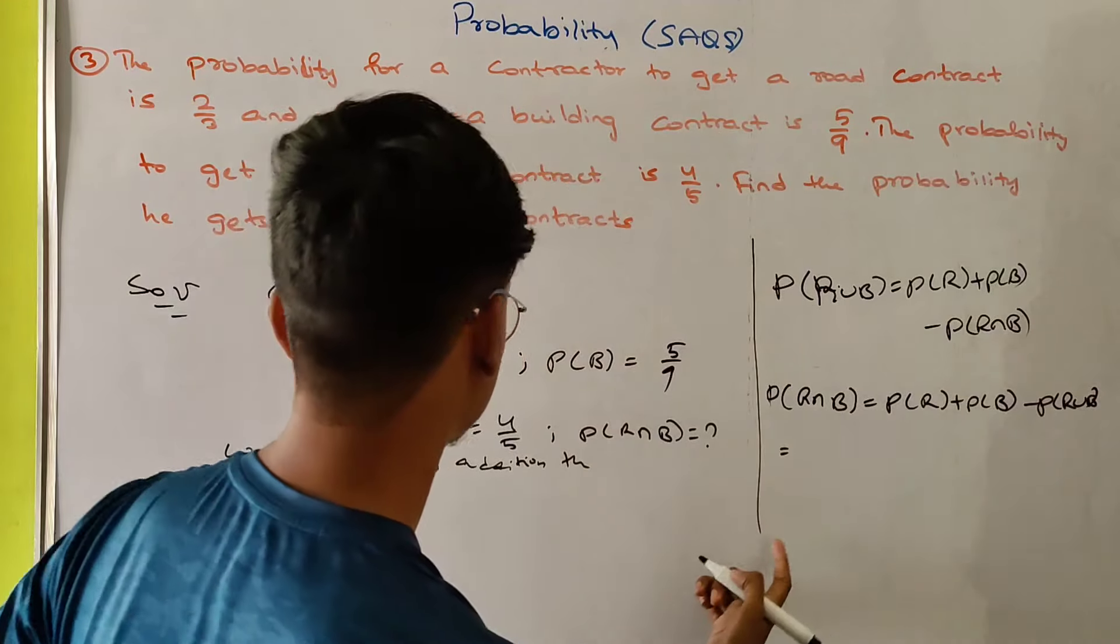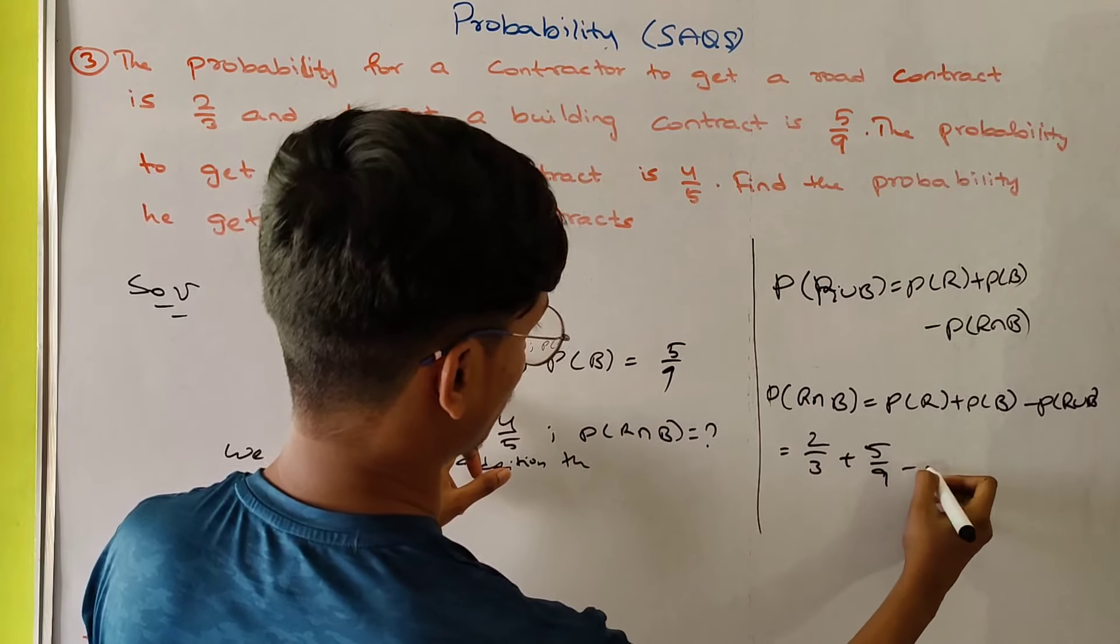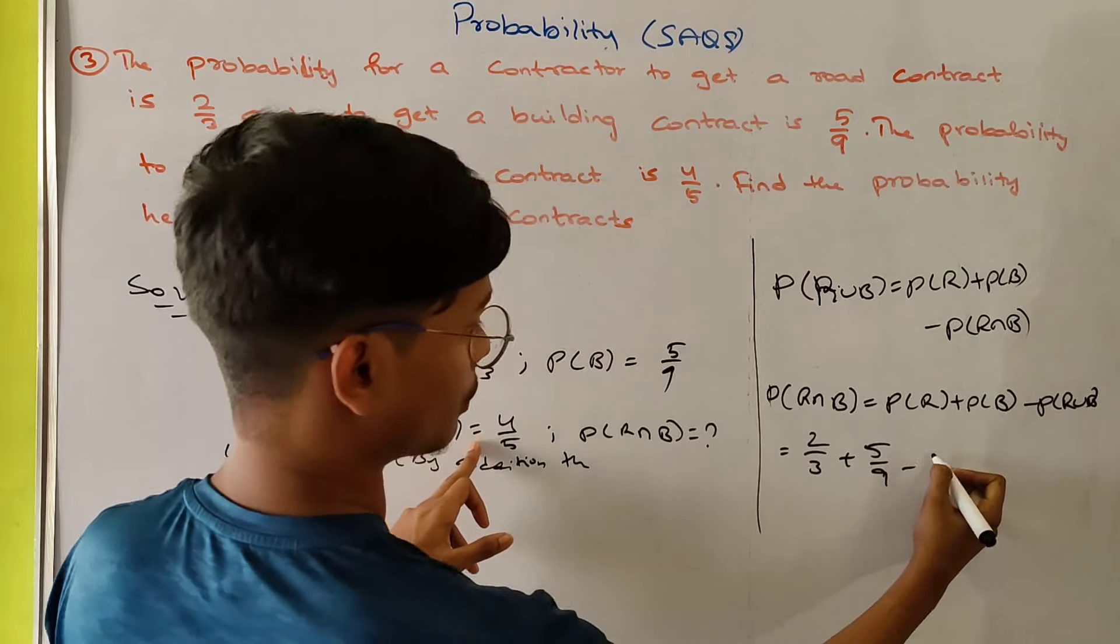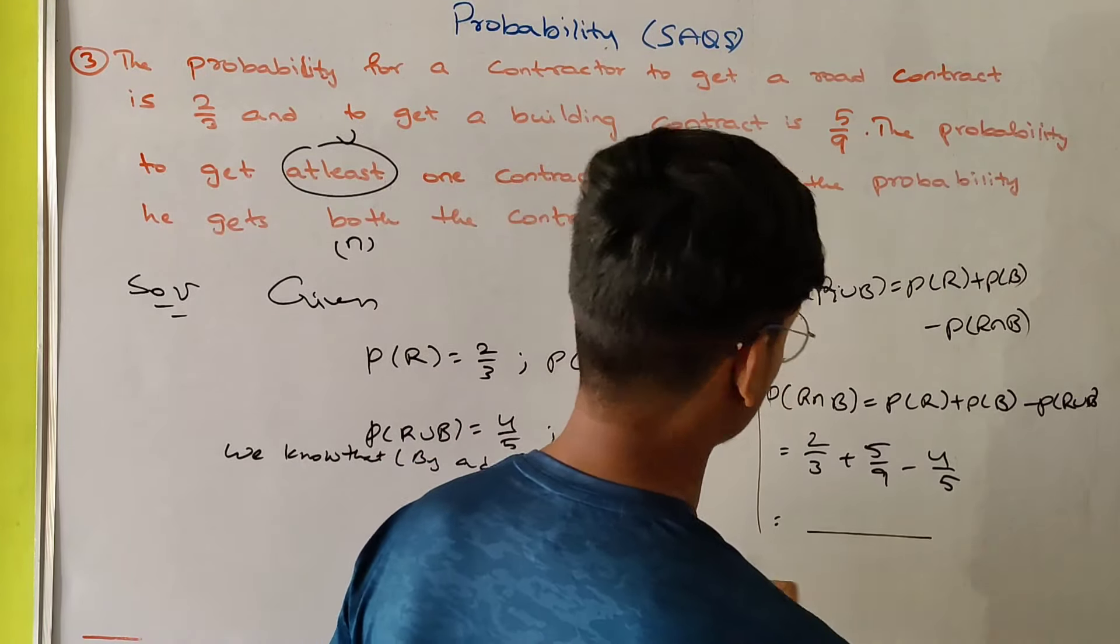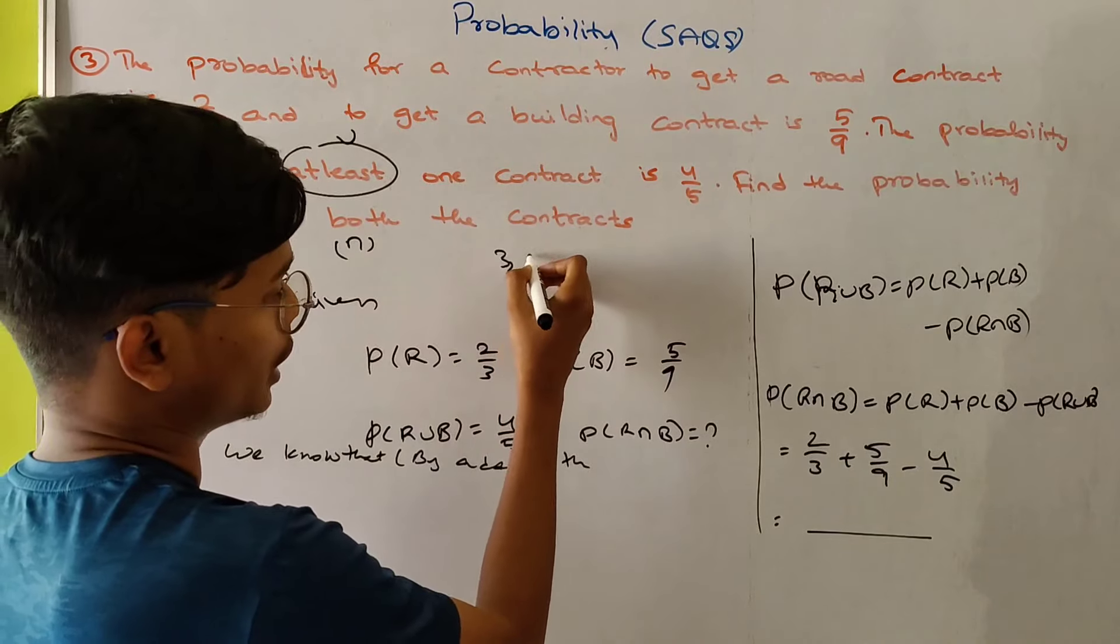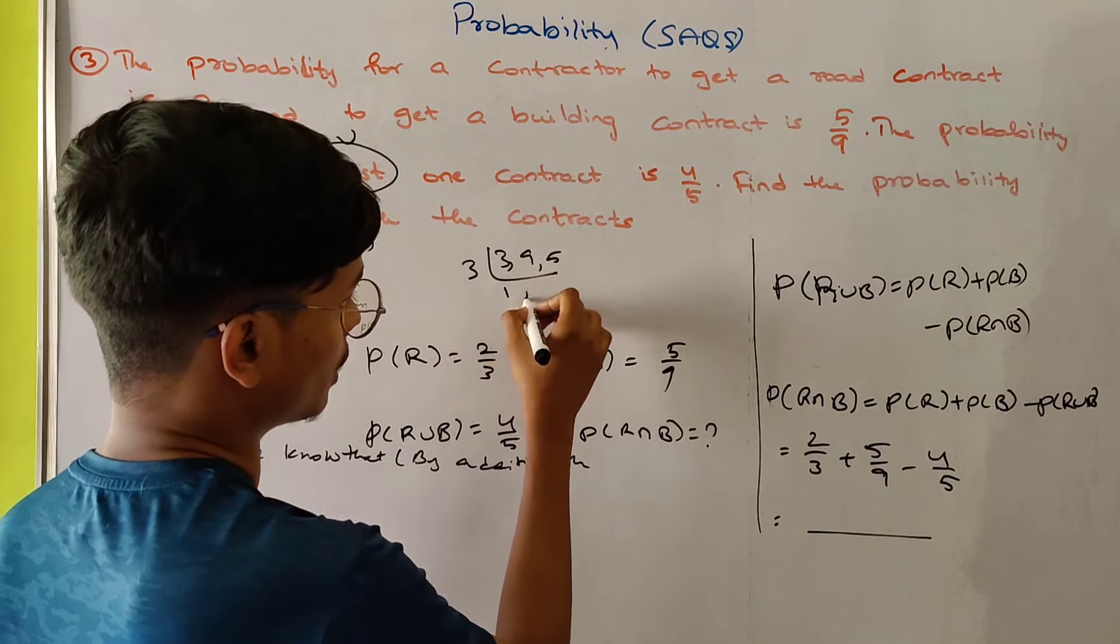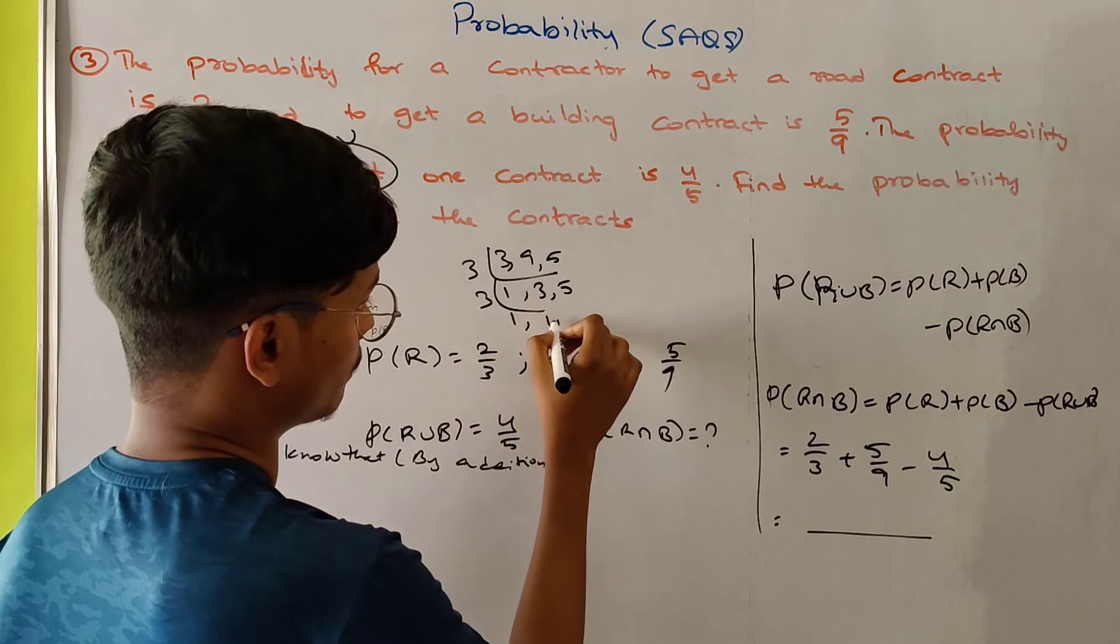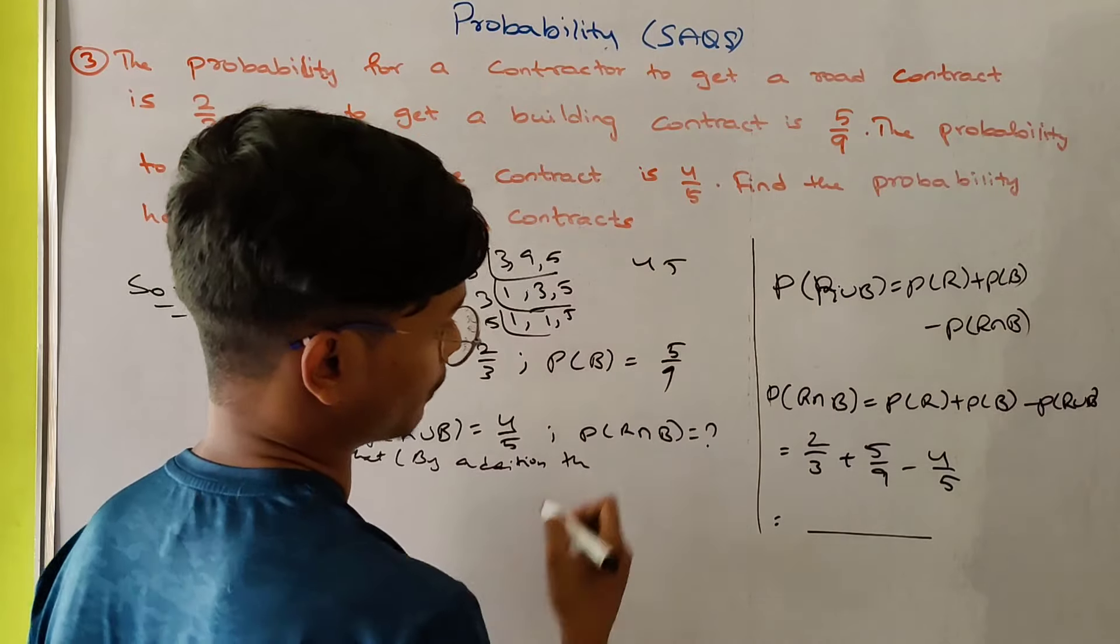Value of P of R: 2 by 3 plus 5 by 9 minus 4 by 5. This is the data. LCM of 3, 9, and 5. 1, 1, 5, 5 and 9, 5 is 45.